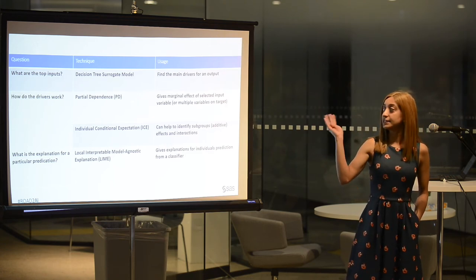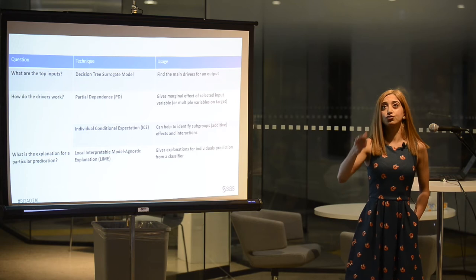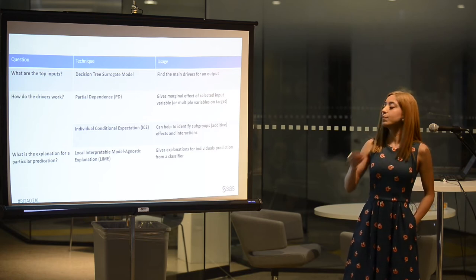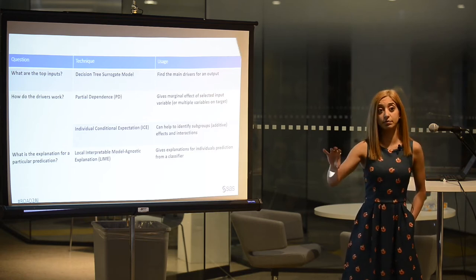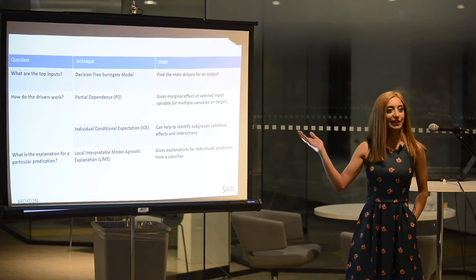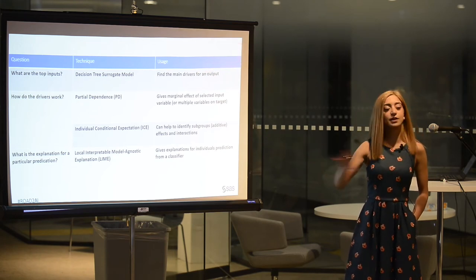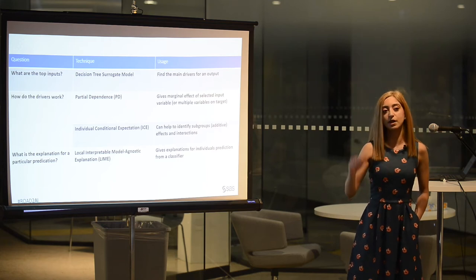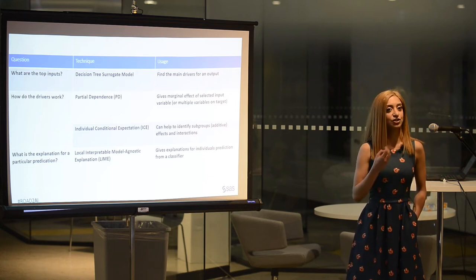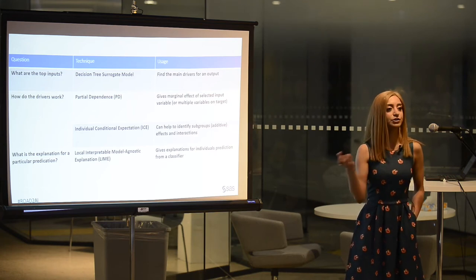Another thing you can do is use partial dependence plots. These try to explain the relationship between your input and your target — the marginal effect of one or all inputs on your target. ICE plots take it a little bit further. Partial dependence plots average everything out to give you an overall view, while ICE plots go instance by instance in more detail, telling you what the additive effects and interactions are, why an input was chosen, and how your prediction changes when you change it.